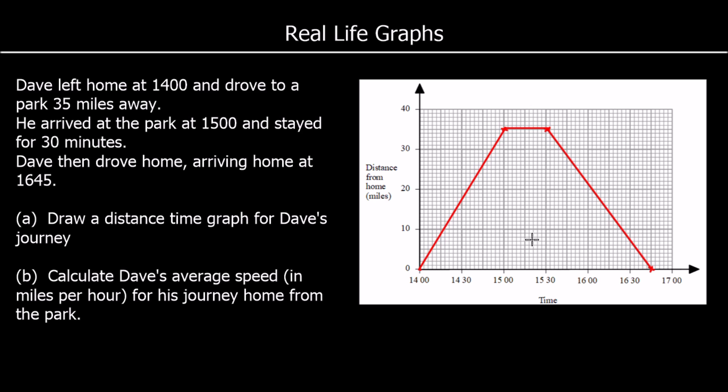And that is drawn. Part B says, calculate Dave's average speed for his journey home. So speed is equal to distance divided by time. Speed is distance over time. And on a distance-time graph, that's also the gradient. The gradient of the line, how steep the line is. But speed equals distance over time. So how far did he travel? What was the distance? So it's 35 miles away. So he travelled 35 miles.